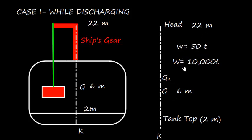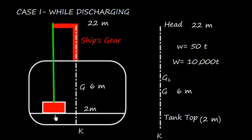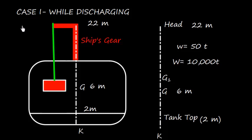And the displacement is 10,000 tons. So it will behave as we have shifted this weight from tank top to the derrick head, because initially the weight was lying on the tank top. Now weight is hanging by the ship's gear, so weight is acting at the derrick head. So it is a problem that weight is shifted from tank top to the derrick head.